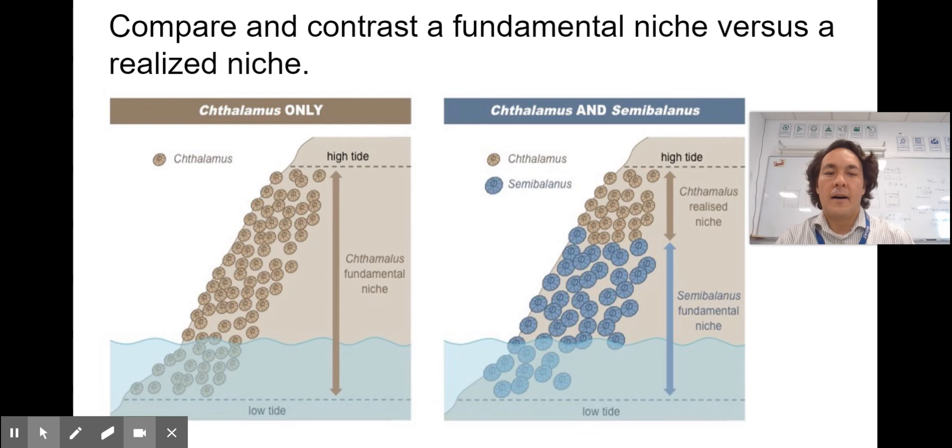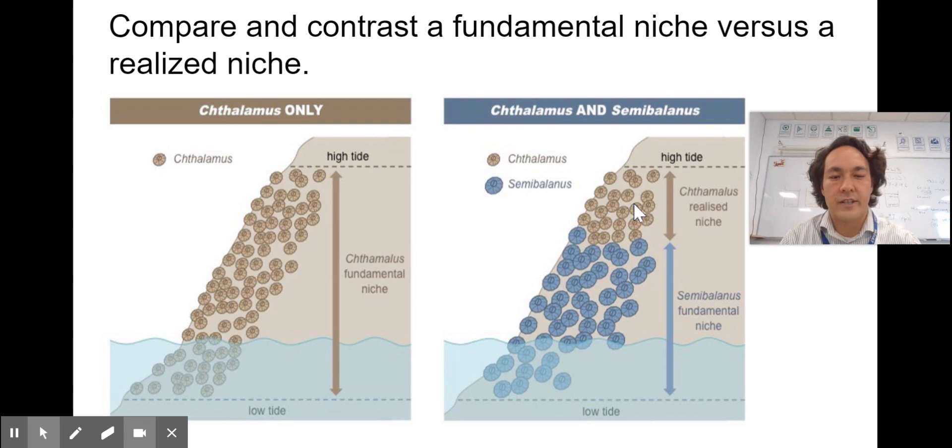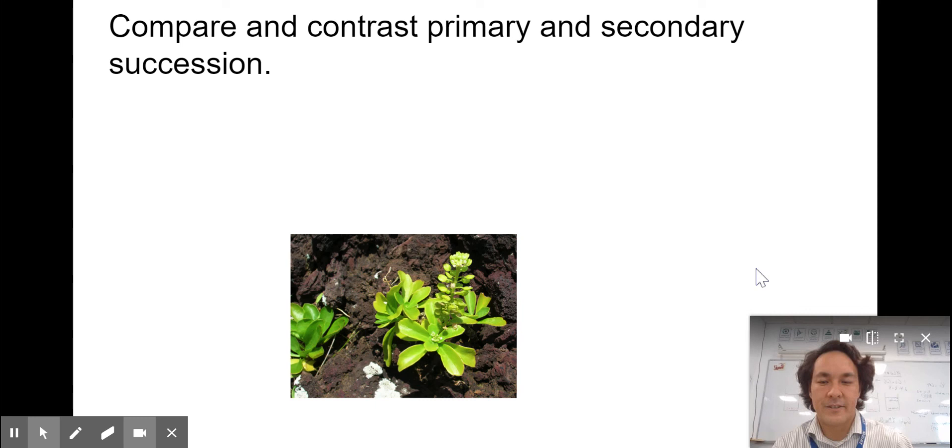Fundamental niches versus realized niches. Here's some barnacles. Cathalamus has a fundamental niche where it can live in high tide and low tide, but it's going to compete with semi-balanus. Semi-balanus lives here and thrives better than cathalamus does. So cathalamus's realized niche is this part of the rock. That's where it can really live. Just like you could go to any high school in Muscat, but you come here to TAISM. So that'd be your realized niche.